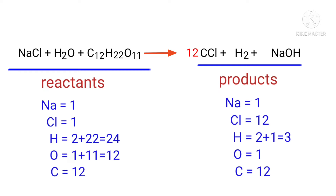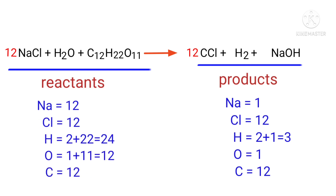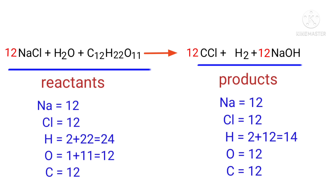Now we need to balance the chlorine atoms. To do this we need to balance the sodium atoms by putting a coefficient of 12 in front of NaOH. The sodium atoms are now balanced.